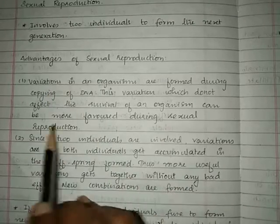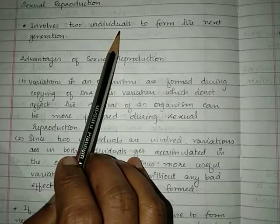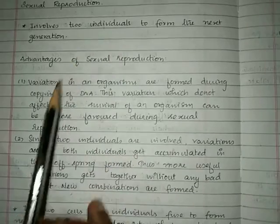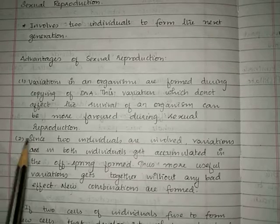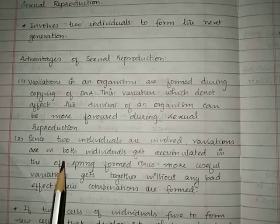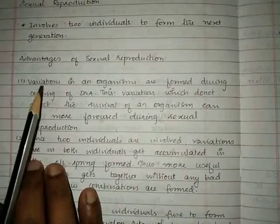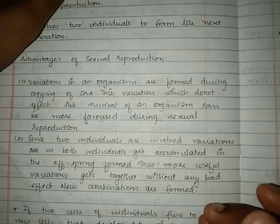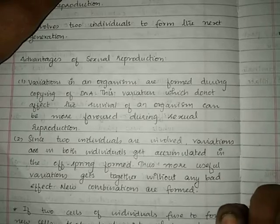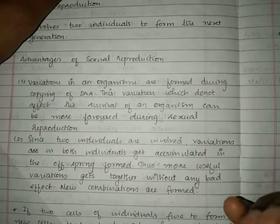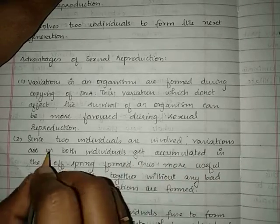In sexual reproduction, two individuals are involved — that is the male and the female organism. The male organism has one group of variations and the female organism has one group of variations. Because two individuals are involved, the variations from both male and female are passed on to the next generation, that is the offspring.